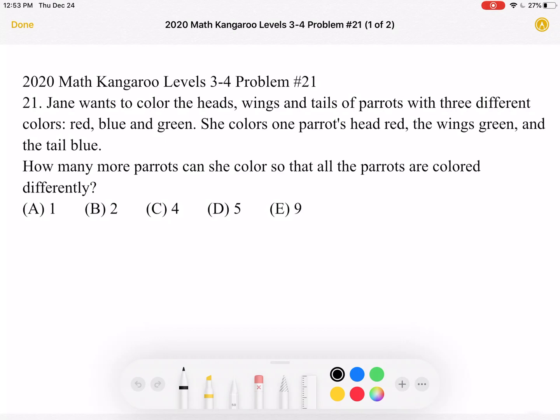She colors one parrot's head red, the wings green, and the tail blue. How many more parrots can she color so that all the parrots are colored differently? A-1, B-2, C-4, D-5, or E-9?